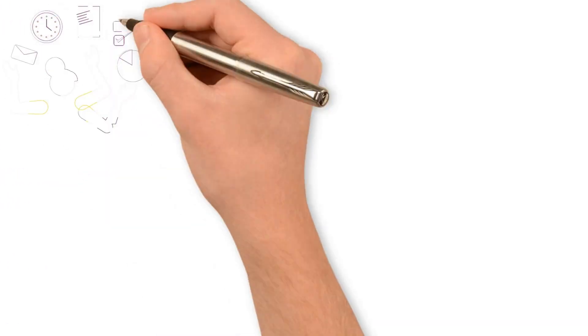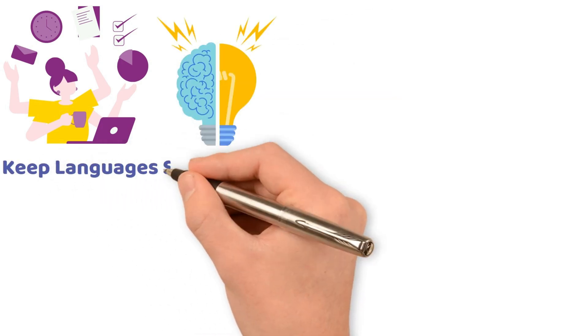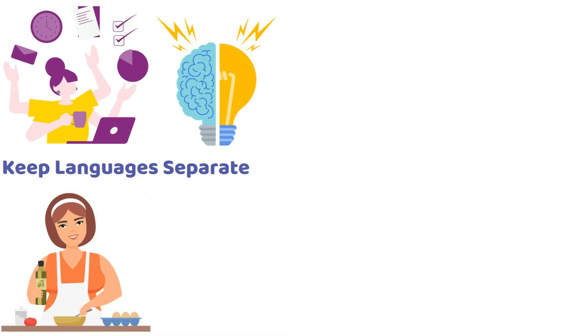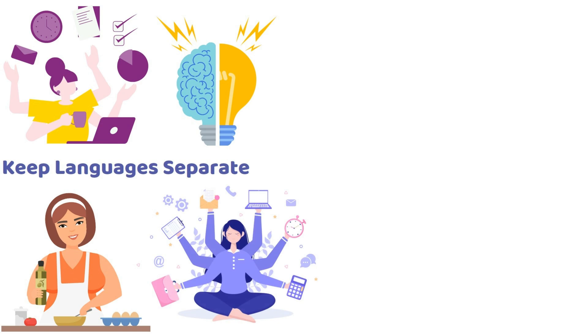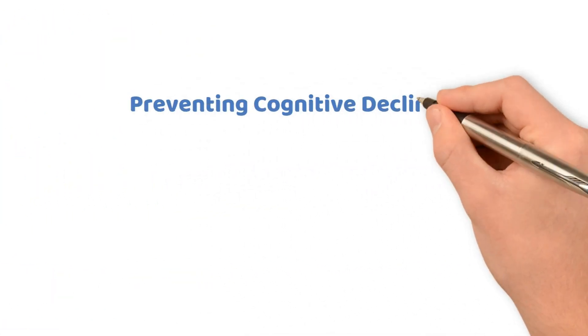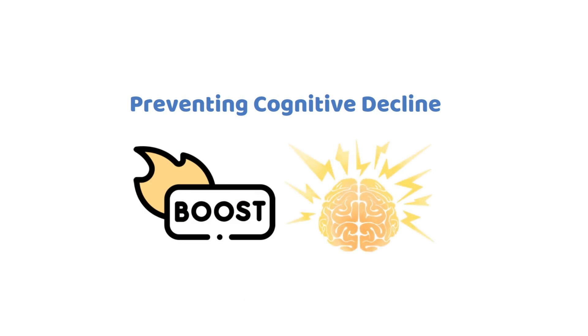And it doesn't stop there. Bilingual individuals are often better multitaskers, thanks to the mental coordination required to keep languages separate. Imagine preparing a meal while having a conversation in another language. This ability to juggle tasks with ease is just one of the many cognitive perks that come with learning a foreign language. So, whether it's preventing cognitive decline or boosting your ability to manage multiple tasks,